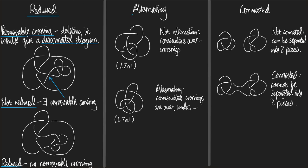Let's move on to the next property: alternating. Alternating is very simple. A diagram is alternating if, as you travel around it, every crossing you go through alternates — one you go over, the next you go under, the next over, the next under, and so on, wherever you start on the diagram. This diagram here is not alternating because you can find consecutive crossings of the same kind — for example, here are two consecutive over-crossings.